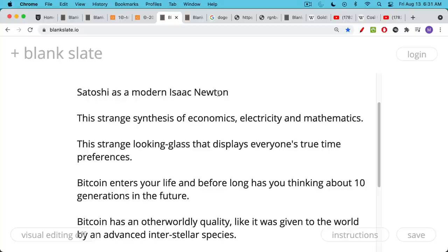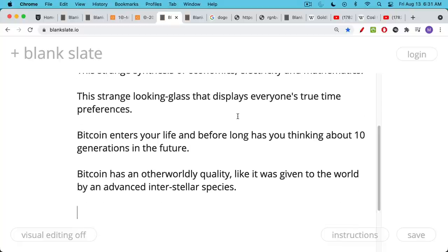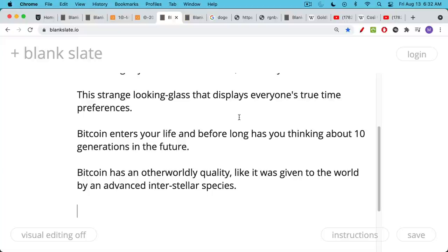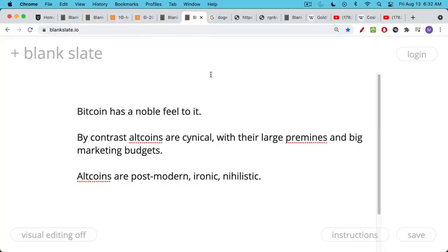Bitcoin itself, just the protocol, has an otherworldly quality to it. Like it was given to the world by an advanced interstellar species. And I would attach a non-zero probability that this actually happened. I think it's a very small probability, but it just seems so otherworldly to me and so bizarre and so out of nowhere that it wouldn't surprise me if this came from somewhere else.